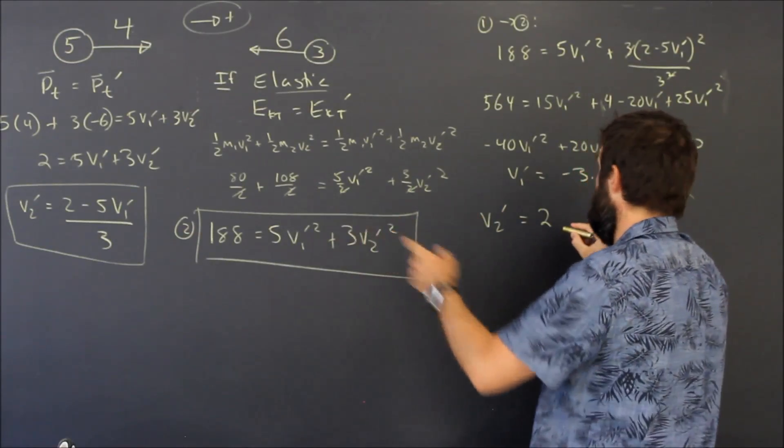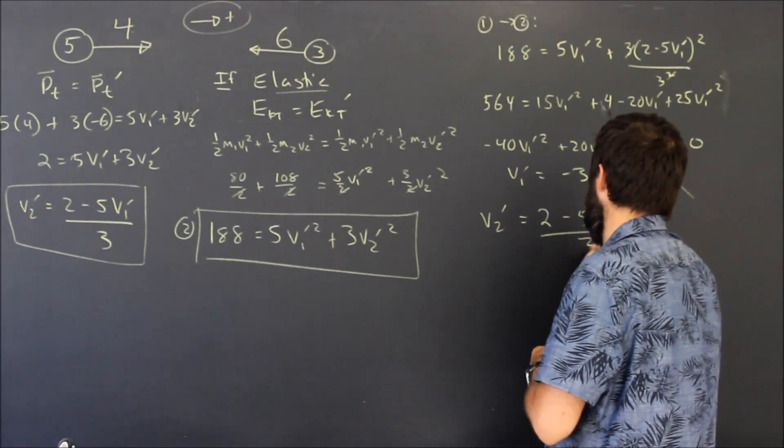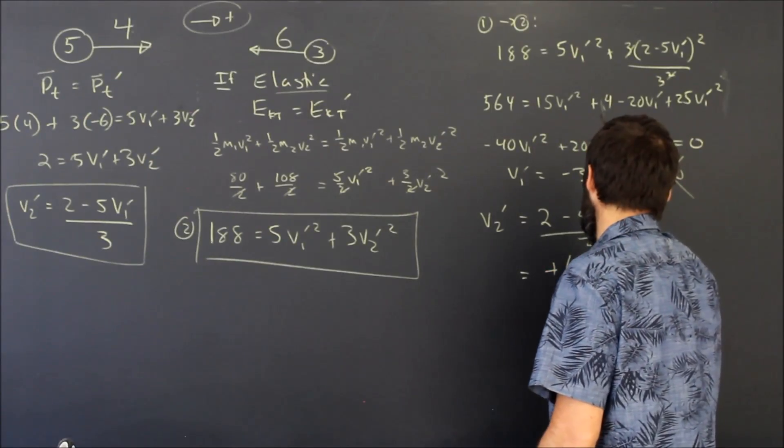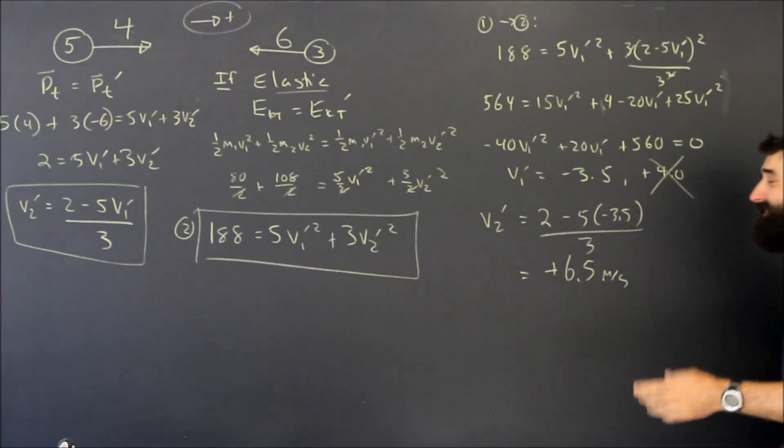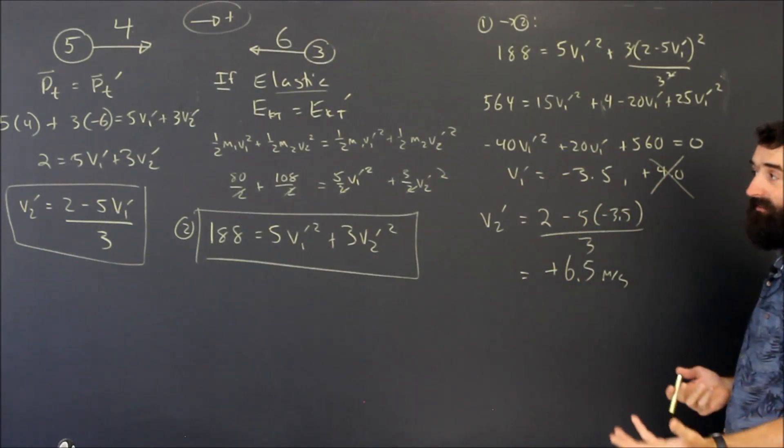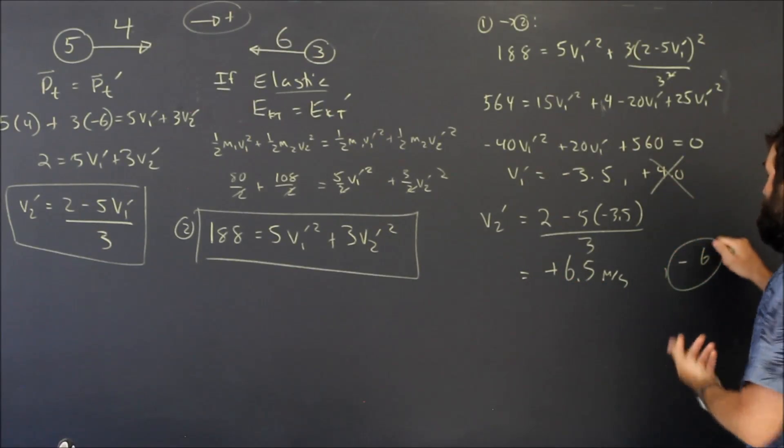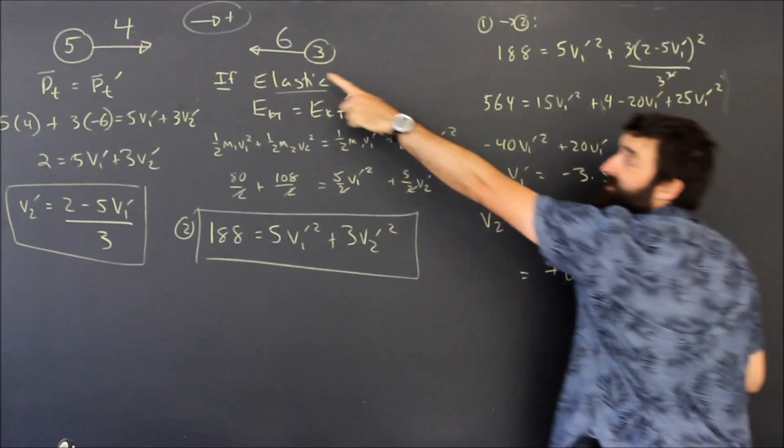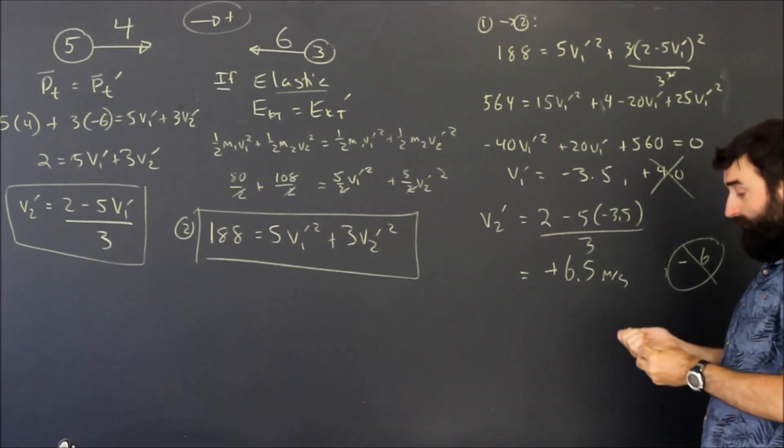I go ahead I shove that guy into equation number one. Five times negative 3.5 all over three and I get an answer of positive 6.5 meters per second. Just as a double check if I put my positive 4 in it I get 2 minus 20 which is negative 18 over 3. I get negative 6 if I use this answer. And that's obviously garbage. But hey it's negative 6. It's the initial condition again. It's the given. It's where we started. So that all sounds really good.